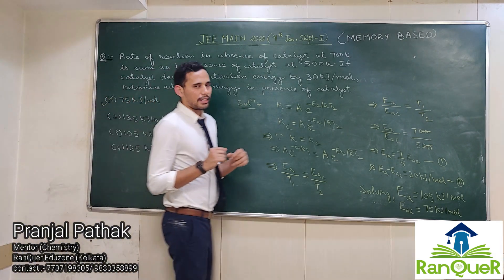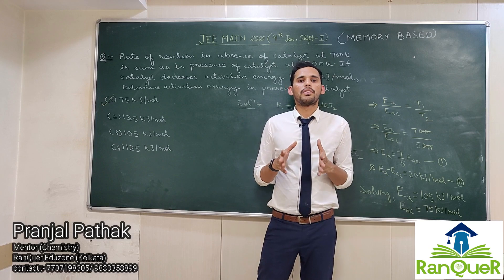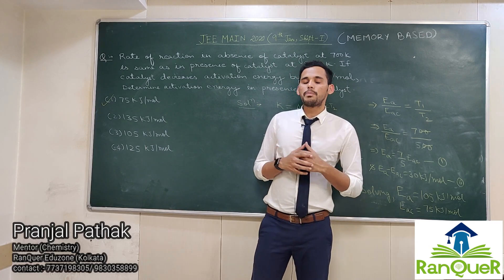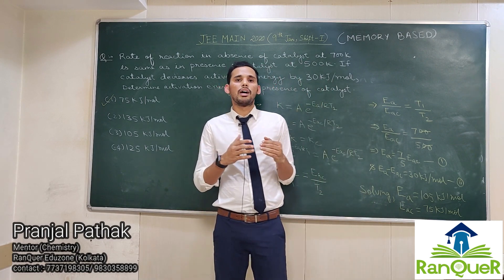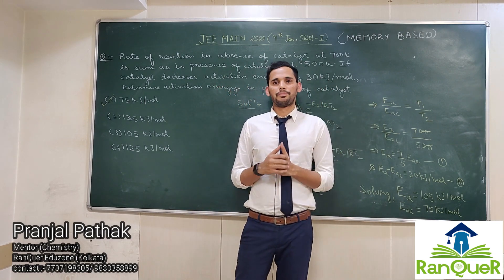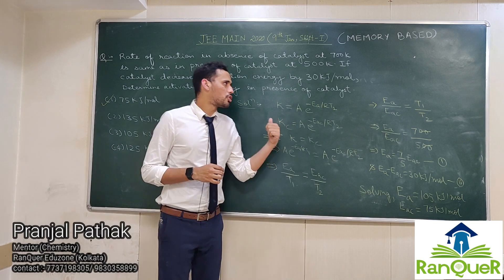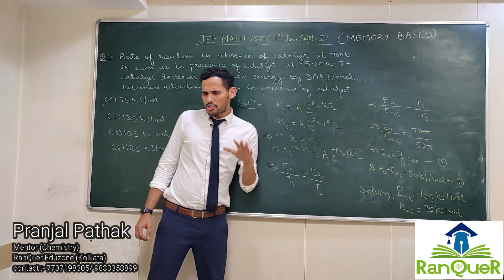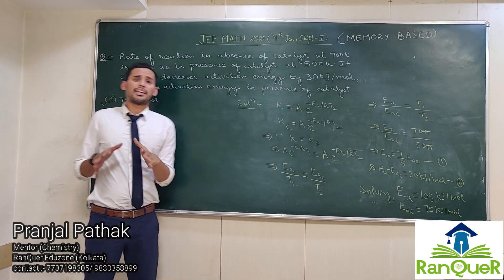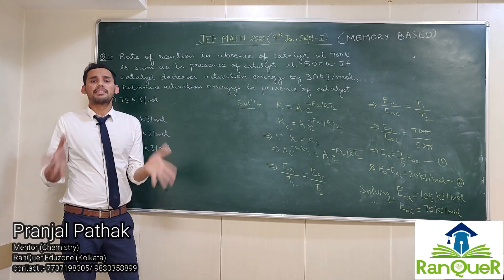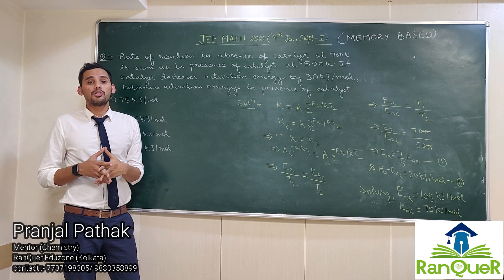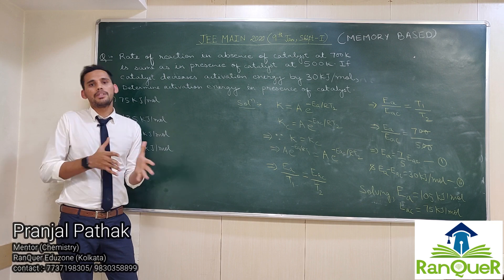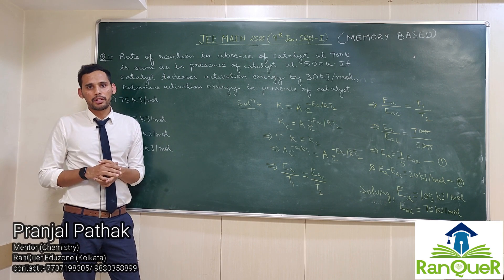In the presence of a catalyst, the rate of a reaction is increased because the catalyst brings down the activation energy. In this question, it has been mentioned that the activation energy has decreased by 30 kilojoule per mole. Yet after using the catalyst, the rate constant remains the same because we are also lowering down the temperature. So the effect of the catalyst is being compensated by the decrease in temperature.